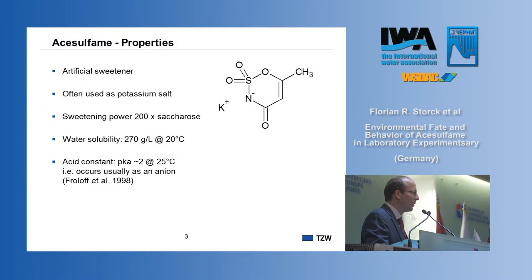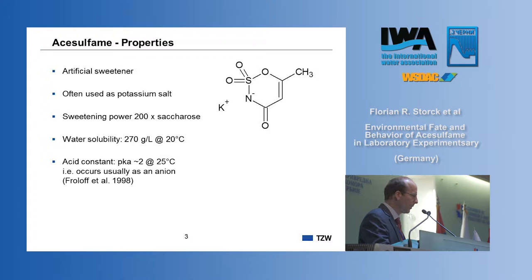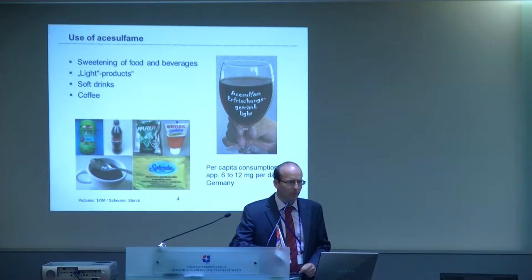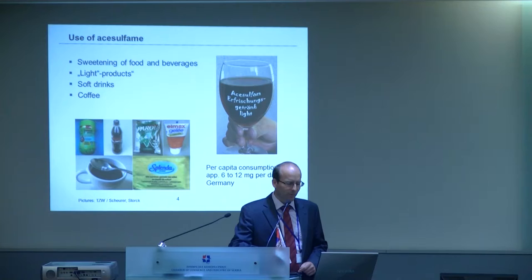Acesulfame — what is it? It is a very small molecule. It is used as an artificial sweetener for beverages, for example, dietary food. It is often used as a potassium salt. The sweetening power is 200 times that of usual sugar, saccharose. It has quite high water solubility, and it is usually occurring as an anion in the environment under typical conditions due to the low acid constant. Acesulfame is used in dietary products, for example, light products. You can sweeten your coffee with it when you do not want to use conventional sugar, and per capita consumption is quite high — approximately 6 to 12 milligrams per day per person in Germany, and in Switzerland and other countries it's quite similar.